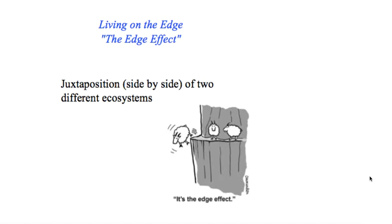Besides succession events, another way that you can change the biodiversity or increase the biodiversity of an ecosystem is what they call the edge effect.